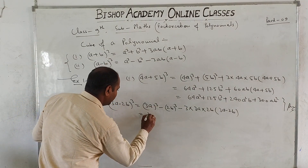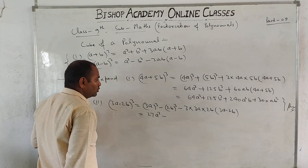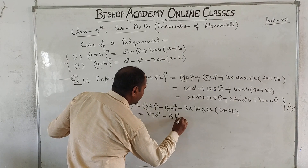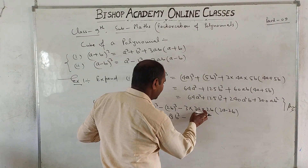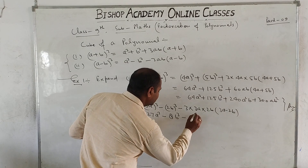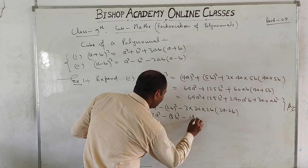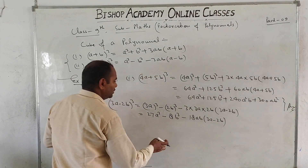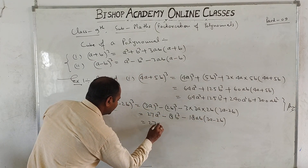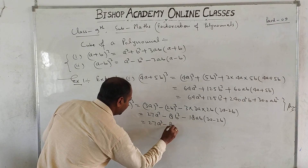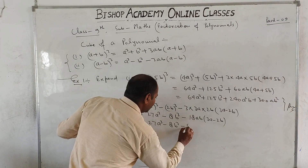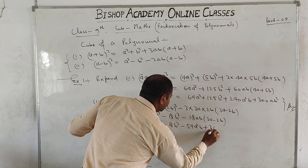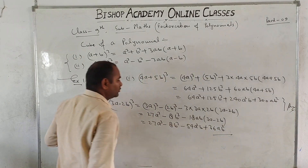Opening the bracket: 3×3 is 9, 9×3 is 27, so 27A cube. 2×2×2 is 8, so minus 8B cube. Minus 3×3 is 9, 9×2 is 18, so 18AB in bracket 3A minus 2B. Expanding gives 27A cube minus 8B cube minus 54A²B plus 36AB².